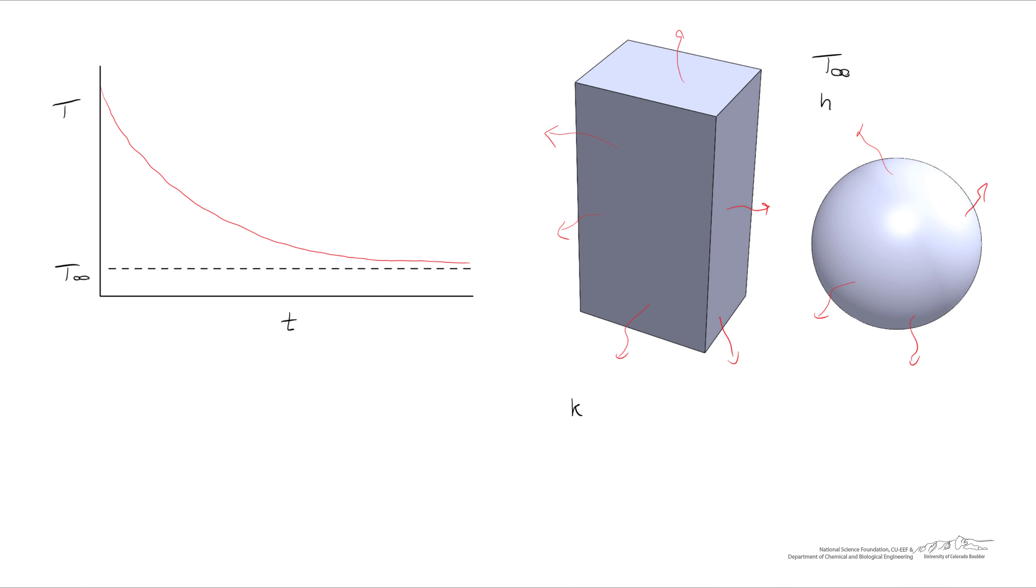Some things that we know about the objects are their thermal conductivity, their heat capacity, and their density, along with their characteristic length. Note that a huge assumption we're making is that the temperature is uniform throughout our object.